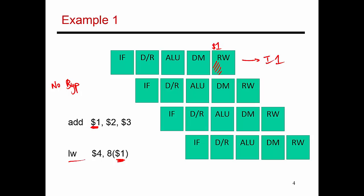Let's look at the second instruction. At what point does it retrieve the value of $1? That's going to happen in the register read stage. For this to work correctly, a register read at that point will correctly get the right value of $1. So instruction 2 has to delay its register read until that cycle. Instruction 2 does its fetch, does a register read that fails, tries again that fails, and then succeeds in doing the correct read of $1 from the register file, and then it proceeds along.